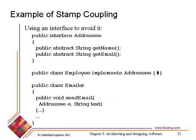A second strategy for decoupling is to use an interface. I declare an interface — in this case I'll call it addressee, meaning the person to whom an email will be sent. This will have the methods getName and getEmail as abstract methods. Then I can declare any class, such as employee, to be an implementer of addressee. In my emailer class, I declare the argument of sendEmail to be an addressee, so I'm no longer tied to the employee class.